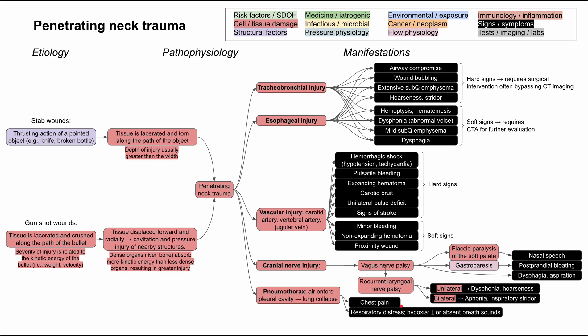Pneumothorax can cause chest pain, difficulty breathing, respiratory distress, dyspnea, hypoxia on vital signs, and decreased or absent breath sounds especially on the side of the pneumothorax. In severe cases, this can lead to a tension pneumothorax, which occurs when there is a one-way valve into the pleural cavity. As you breathe in, more and more air enters the pleural cavity, and the pressure progressively increases within the chest.